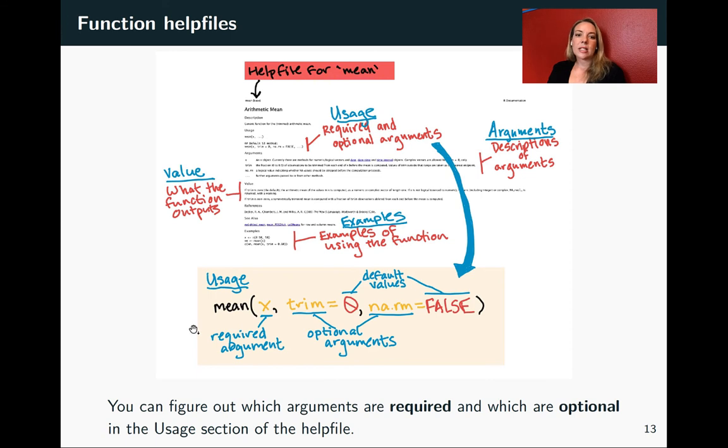This usage section is the space where you can figure out which arguments are required and which arguments are optional. It will have the function and then the parentheses, and then it'll put through all of the named arguments that you can have. If a named argument does not have equals and a value after it, it means that it is a required argument. It's something that you have to set. On the other hand, if you have a formal argument and then you have a value after it, those are optional. Those are values where it will default to that default value, whatever is in the usage. And if you want to change that, you should set it. But if you're fine with that value, you can just leave it as is.